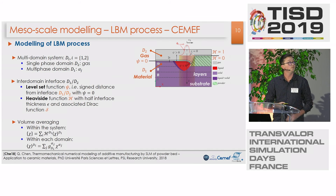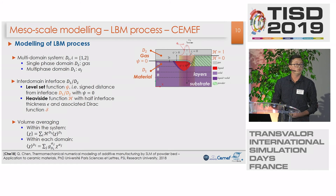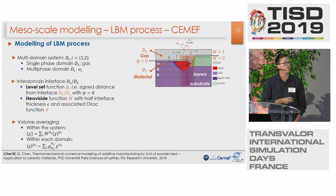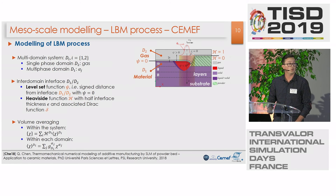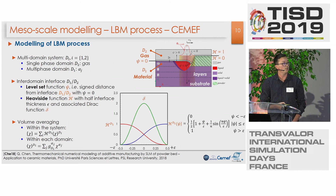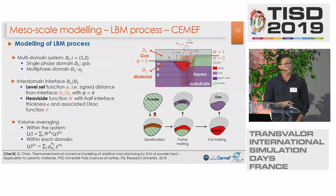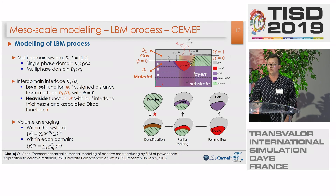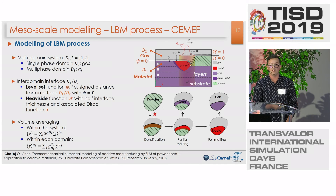Now I will talk about the modeling of the LBM process. Because we are using a finite element method, we traditionally use the level set method, where we have a distance function to track the interface between the gas and the material — which can be liquid (the melt pool), solid, or the mushy zone. We define at the interface an Heaviside function with thickness epsilon to ensure a smooth transition of material properties around the interface. The powder bed is considered as a continuum medium to ensure good CPU time cost, and the densification of the powder bed into a melt pool and then to solid is considered irreversible in the simulation.